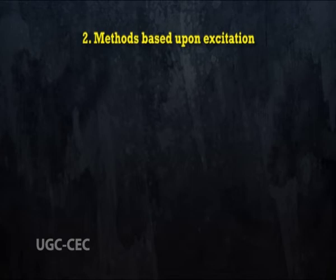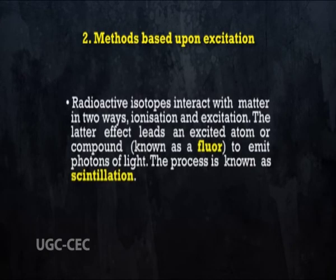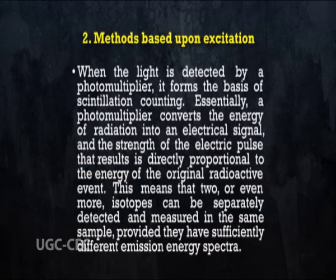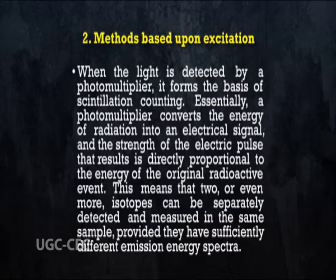The second method is based upon excitation. Radioactive isotopes interact with matter in two ways: ionization and excitation. The latter effect leads an excited atom or compound, known as the fluor, to emit photons of light. The process is known as scintillation. When the light is detected by a photomultiplier, it forms the basis of scintillation counting. A photomultiplier converts the energy of radiation into an electrical signal, and the strength of the electric pulse is directly proportional to the energy of the original radioactive event. This means that two or more isotopes can be separately detected and measured in the same sample, provided they have sufficiently different emission energy spectra.